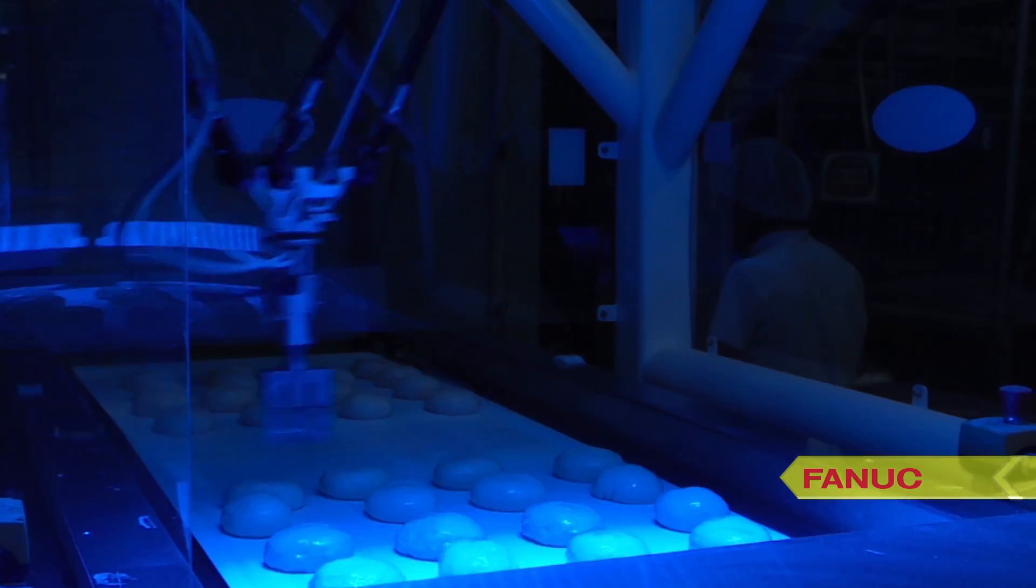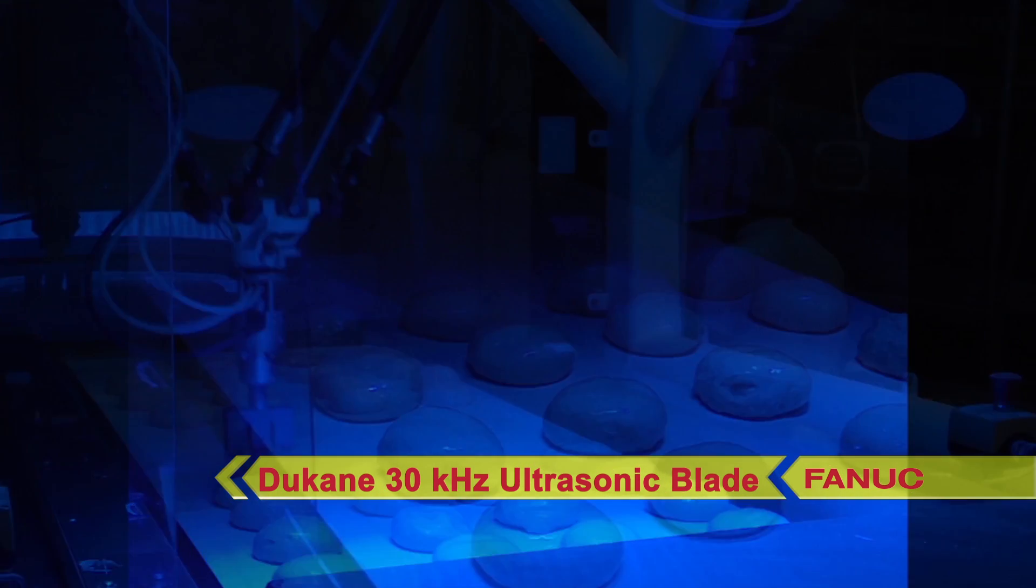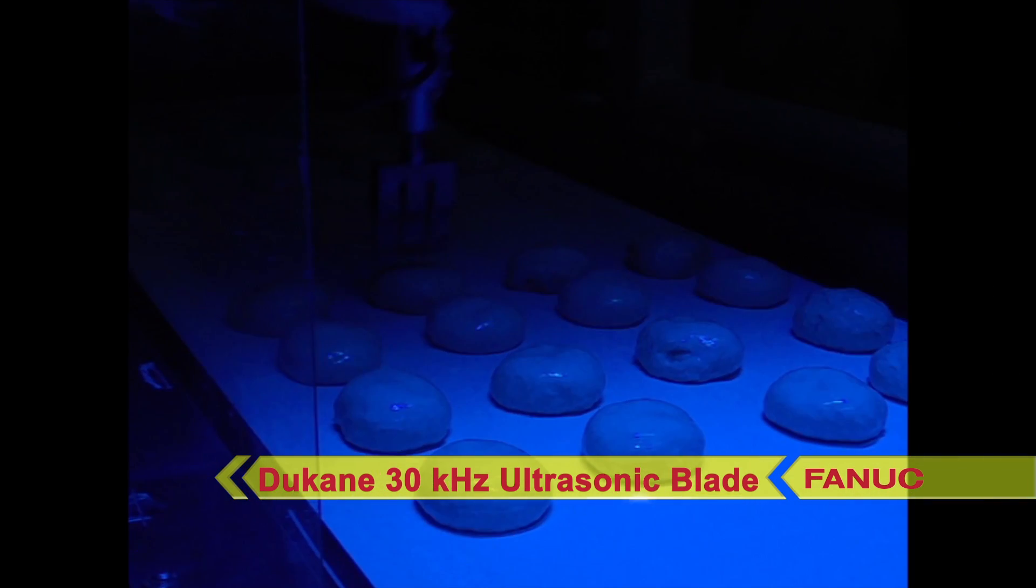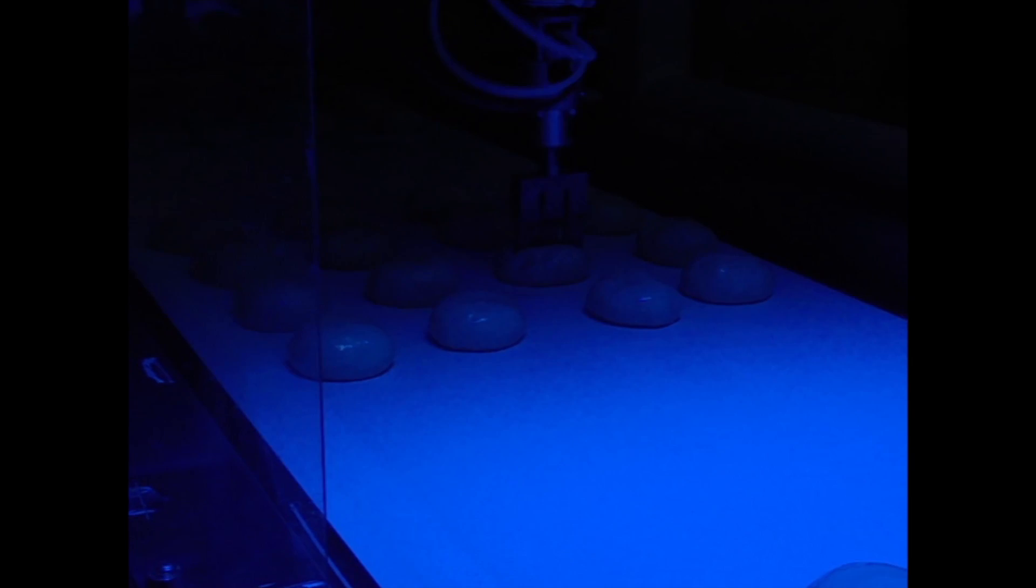A specialized 30 kHz ultrasonic probe and blade from Duquesne scores the bread. This ultrasonic tool offers the best cut for this particular product. However, many other tooling options are available to help match a customer's scoring configuration and their distinct products.